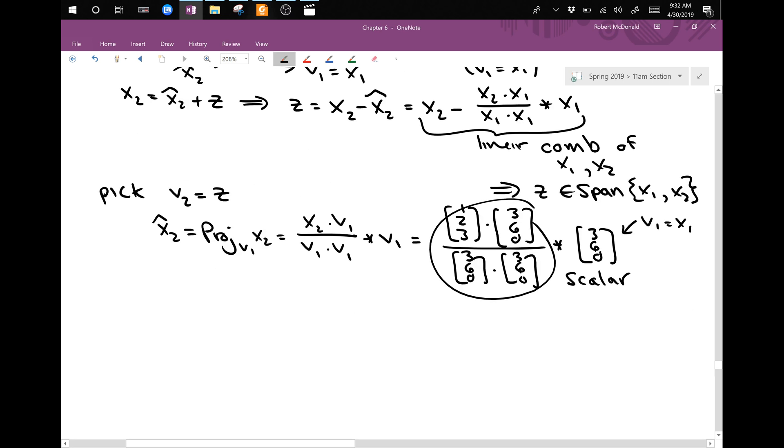So after some simplification, you should find out that this is actually one third times [3, 6, 0], and that's [1, 2, 0].